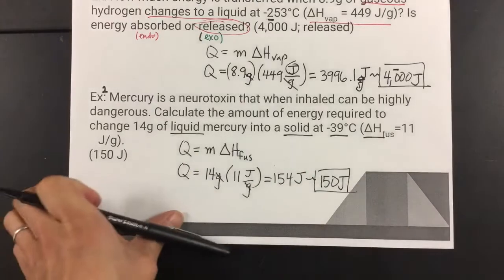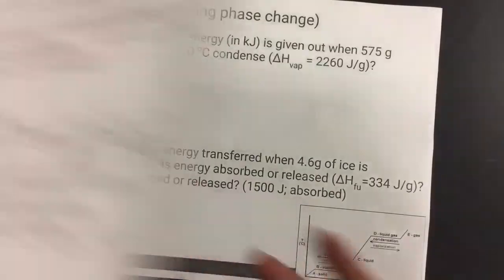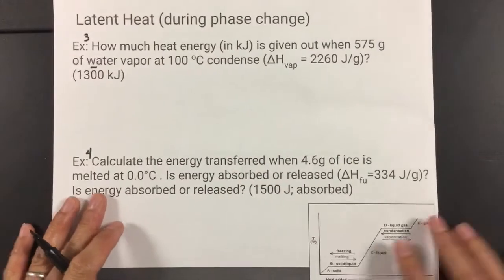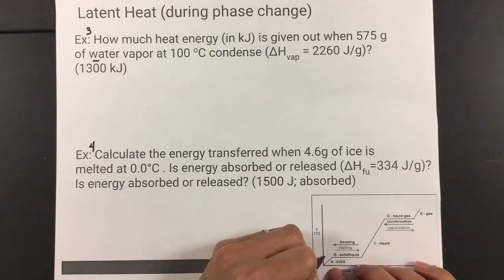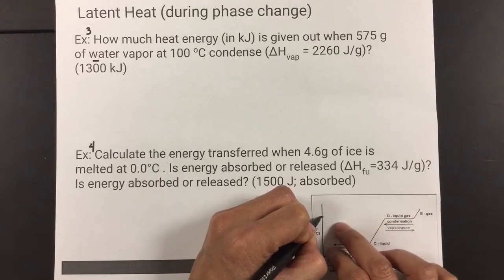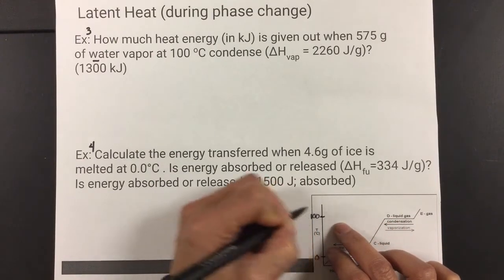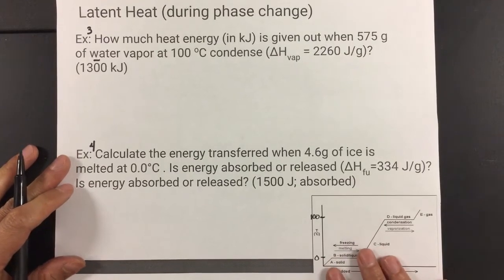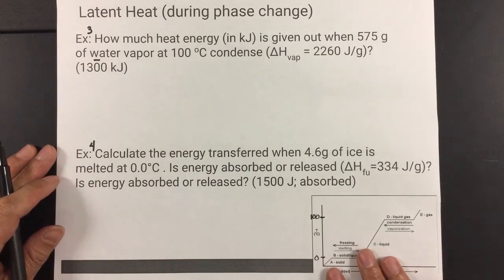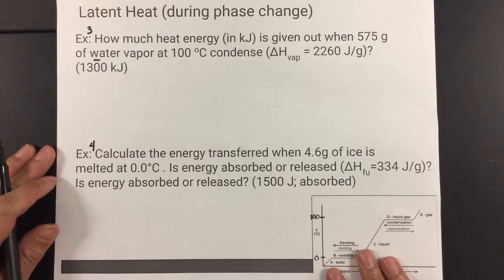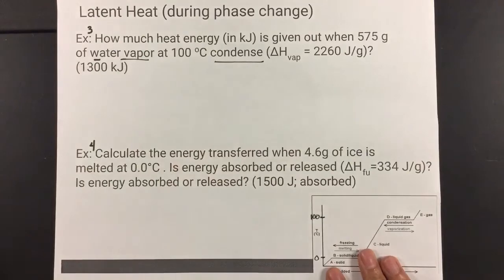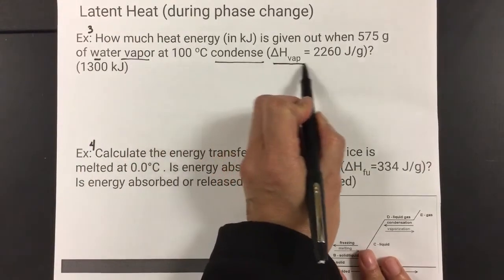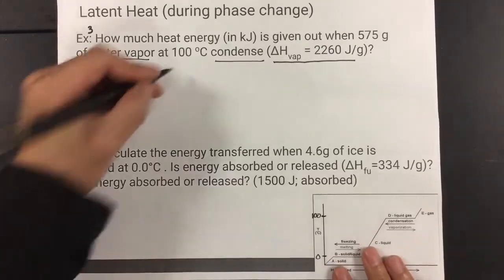There's two more example problems to add to that. All the same kind of idea. But, now we're looking at water. So, I have water's heat curve down here. And, we know it's water if we see 0 and 100 up here where it boils. So, 0 and 100. So, it says, how much energy, heat energy, in kilojoules is given when 575 grams of water vapor at 100 condenses? The word condensation means it is, in fact, a phase change problem. And, also ΔH vape.